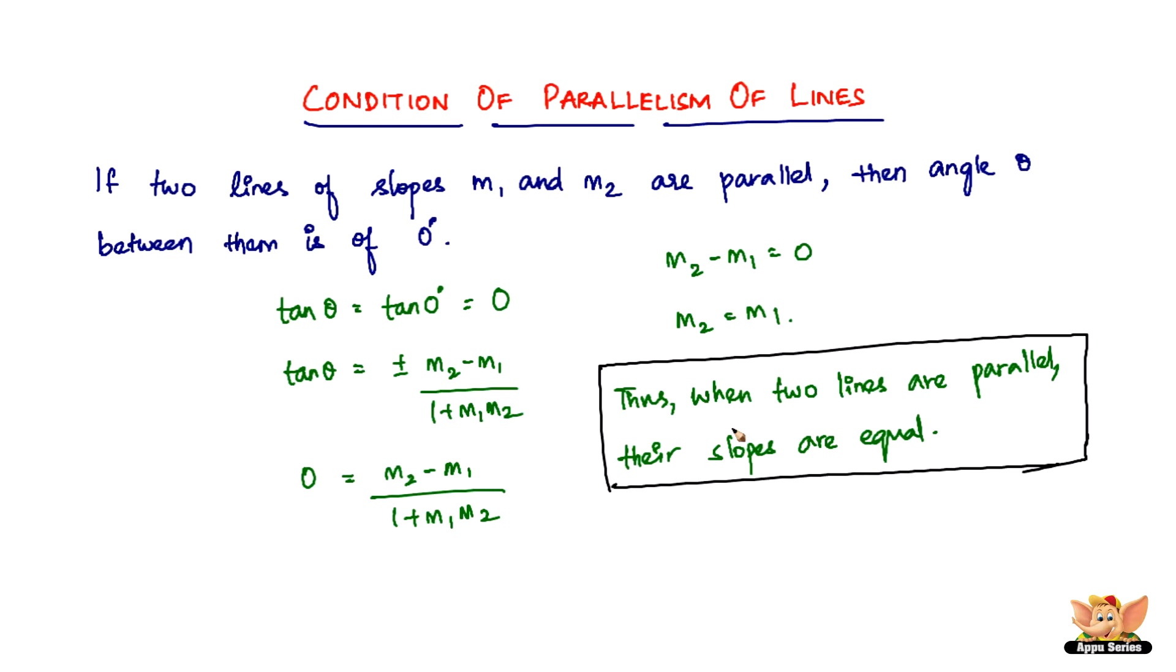Of course, all these things are going to lead you to this, but this is exactly what we are trying to understand from this video. We're trying to understand that when two lines are parallel to each other or when their angle is 0 degrees, the slopes are going to be equal to each other.